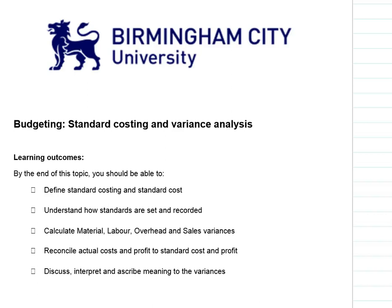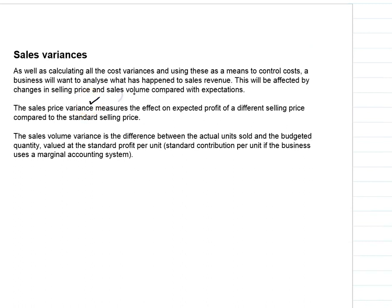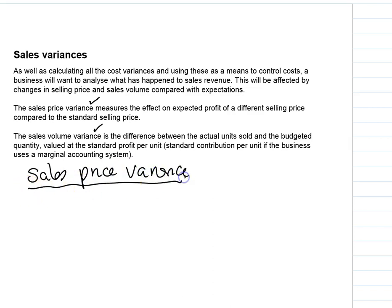Welcome back. This session is looking at a particular aspect of variance analysis — sales variances. A lot of time is spent looking at cost variances, working out why material costs were different to expected, but we can't ignore what happens on revenue. It has just as much impact on overall profitability. With the sales variances, we're going to be looking in particular at a price variance and a volume variance, so we can find out in detail the two main drivers behind our revenue.